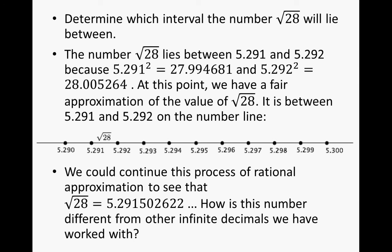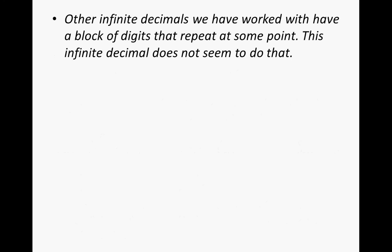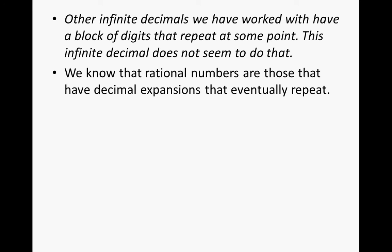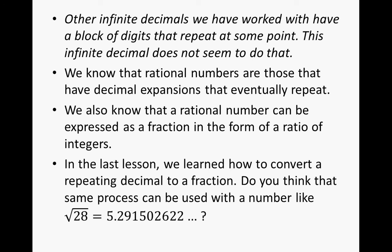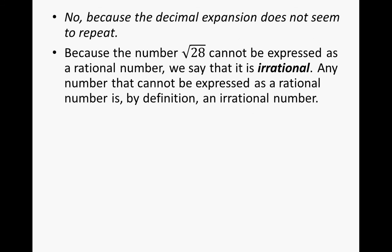How is this number different from other infinite decimals we have worked with? Other infinite decimals we have worked with have a block of digits that repeat at some point — this infinite decimal does not seem to do that. We know that rational numbers have a decimal expansion that eventually repeats and can be expressed as a fraction. In the last lesson, we learned how to convert a repeating decimal to a fraction — but that same process cannot be used with the square root of 28, because the decimal expansion does not repeat. Because the square root of 28 cannot be expressed as a rational number, we say that it is irrational. Any number that cannot be expressed as a rational number is, by definition, an irrational number.